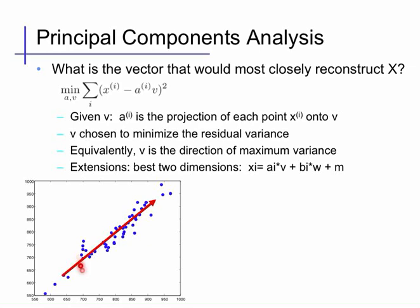Equivalently, if we're trying to minimize the variance off the vector v, v will be the direction that maximizes the variance of the data within its space. Although in this example I'm choosing a single vector v and a single scalar a, if we have a higher dimensional x we can generalize this to a more complicated model with more coefficients. If x had three or four dimensions, we might describe it as a linear combination of two vectors v and w, each in four-space, and two coefficients a and b. This would compress the four-dimensional vector x into a two-dimensional vector (a, b) and a model (v, w) with two components each.